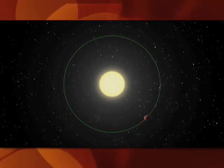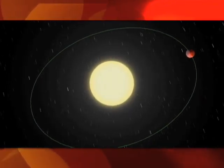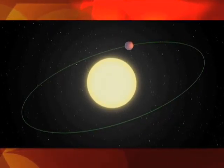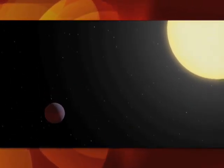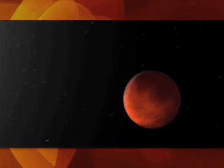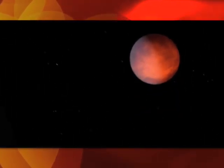This animation shows an unexpected warm spot on the surface of the gaseous exoplanet known as Epsilon Andromeda b. Taking only four and a half days to complete an orbit, this planet is tidally locked to its star, with the same side always facing the heat.